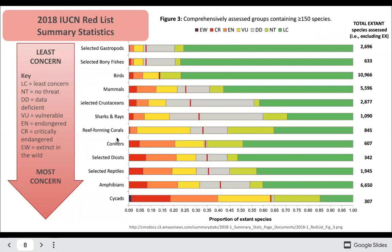Here's a breakdown of how that looks for each group of organisms. You might see that certain organisms, like amphibians, tend to have a higher percentage of endangerment than other groups.